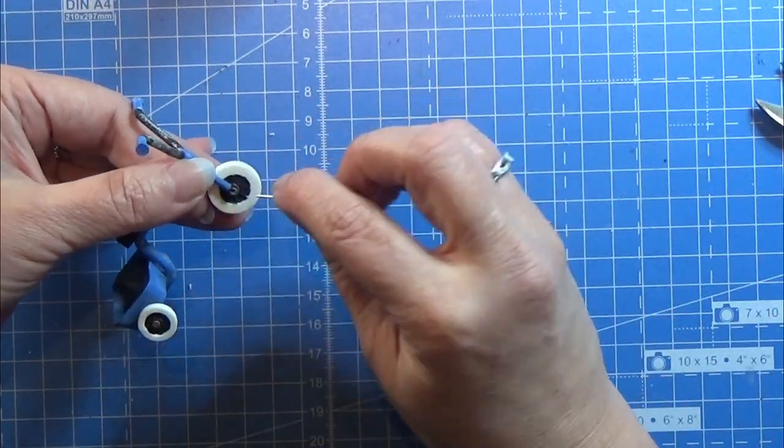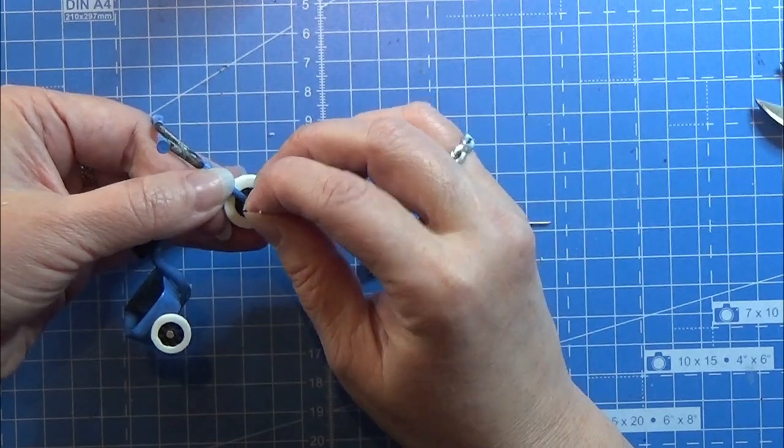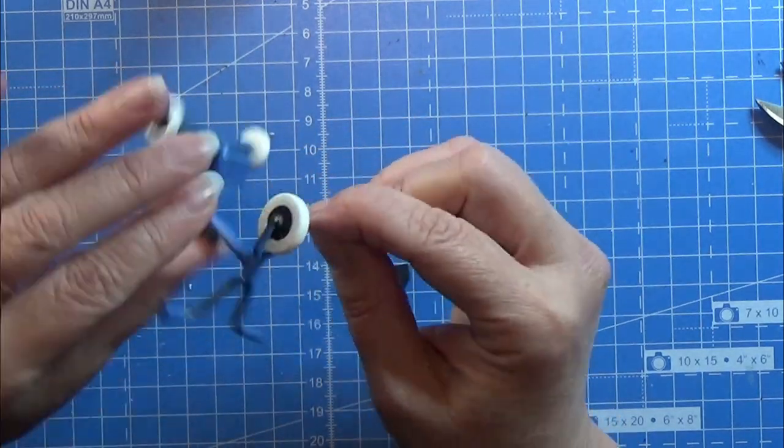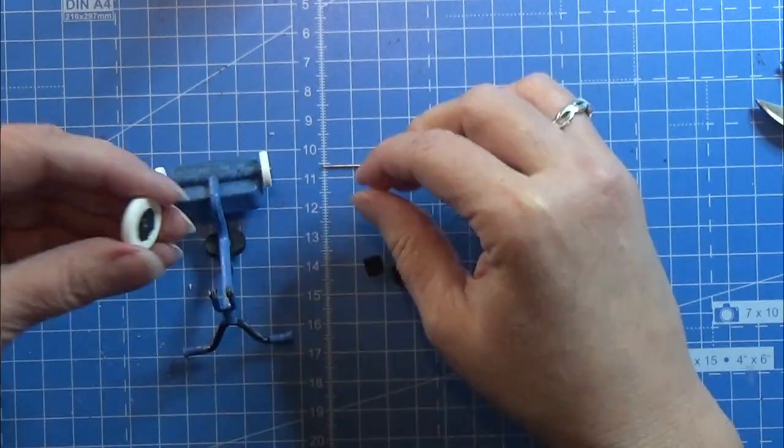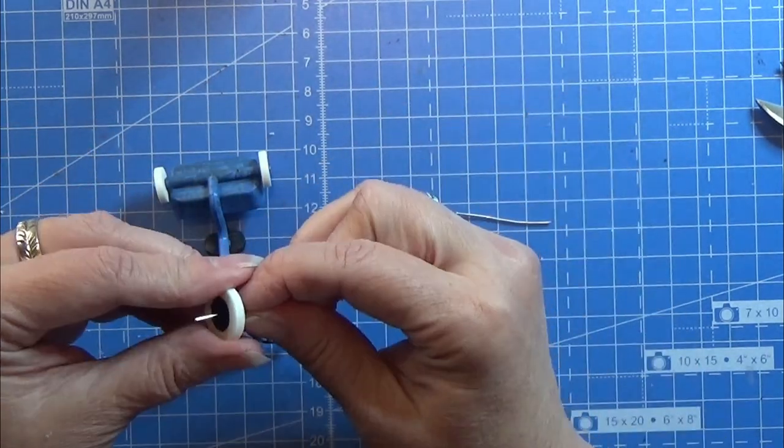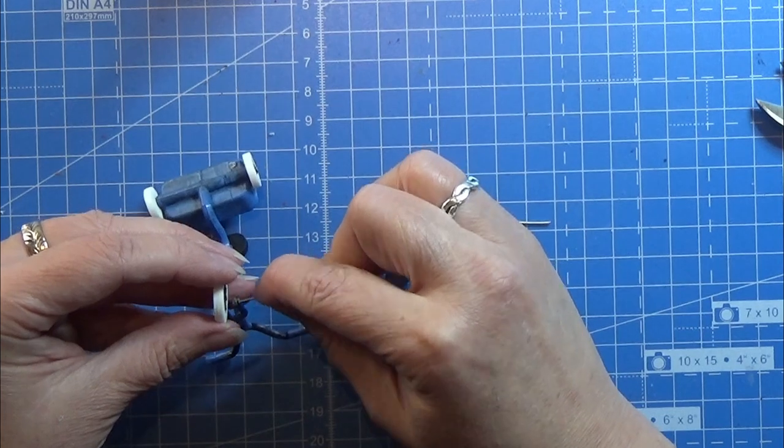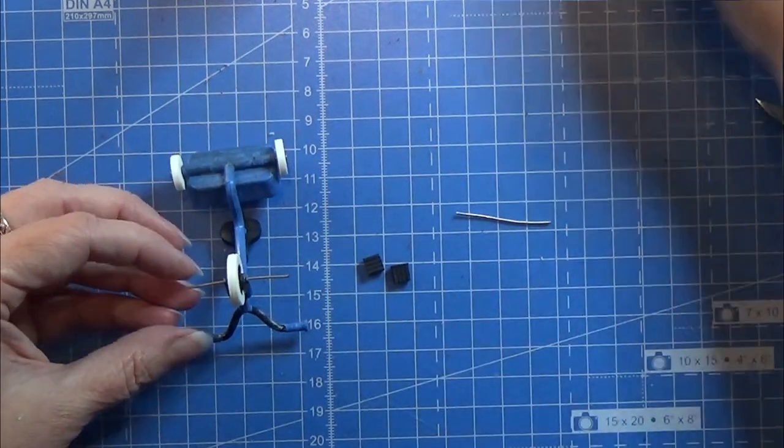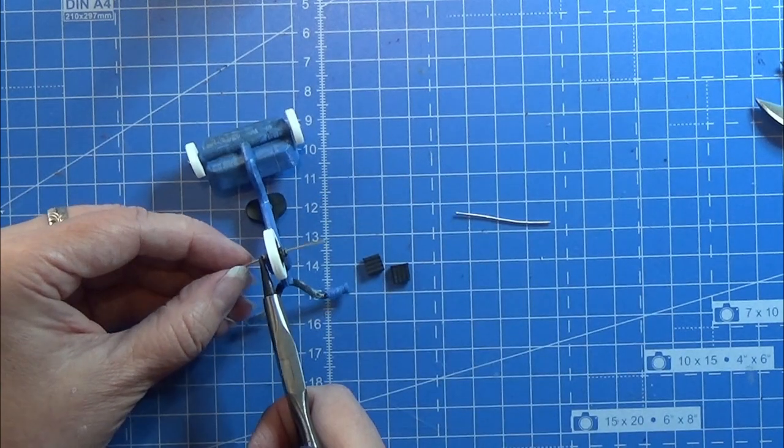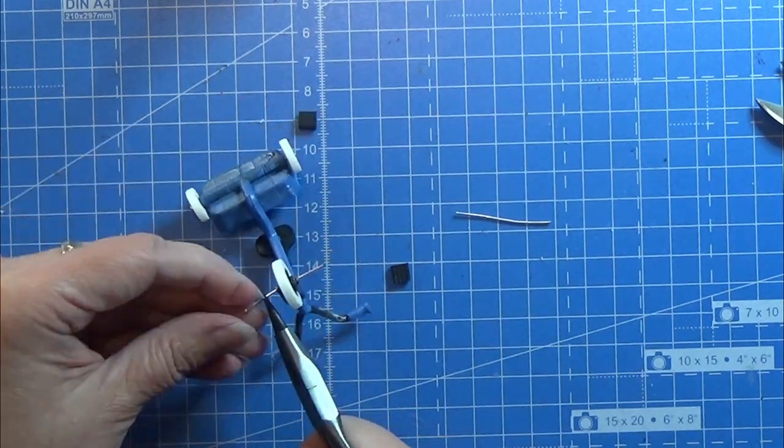For the front wheel, I am using the piece that is left from one of the eye pins. First of all, I'm going to place the wheel in place. This way I can find the point where I have to bend this little pin.